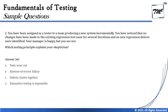Moving on to Question Number Two: you have been assigned as a tester to a team producing a new system incrementally. You have noticed that no changes have been made to existing regression test cases for several iterations and no new regression defects were identified. Your manager is happy but you are not. Which testing principle explains your skepticism?